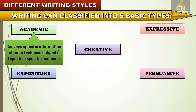When we say academic writing, it refers to conveying specific information about a technical subject or a topic to a specific audience. Academic writing is probably the most formal of all the writing styles, as it aims to explain or discuss a particular topic or concept to a group of people using words or jargons that are recognized only by the target audience.